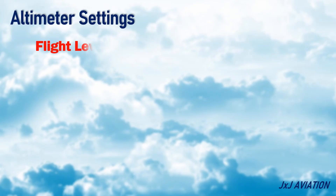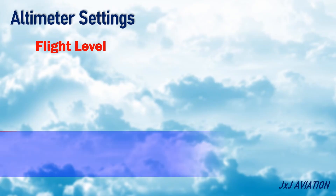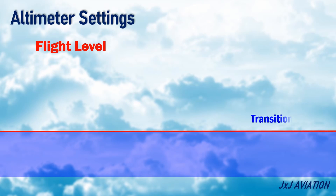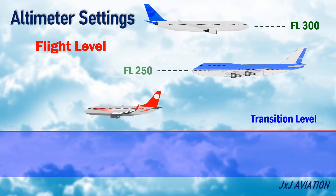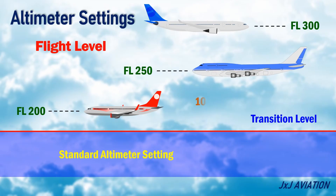Flight Level: This setting is used above the transition level when an aircraft has to fly with reference to flight levels. All aircraft operating above the transition level use a standard altimeter setting of 1013 hectopascals, or HPA. This is also referred to as QNE.